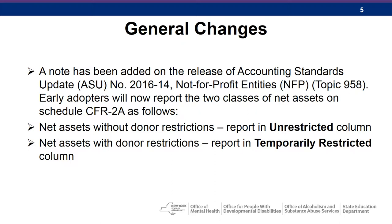A note has been added on the release of the Accounting Standards Update number 2016-14, Not-for-Profit Entities. Early adopters will now report the two classes of Net Assets on Schedule CFR 2A as follows: Net Assets without donor restrictions reported in unrestricted columns; Net Assets with donor restrictions reported in temporarily restricted columns. Effective for annual financial statements issued for fiscal years beginning after December 15, 2017, and for interim periods within the fiscal years beginning after December 15, 2018.